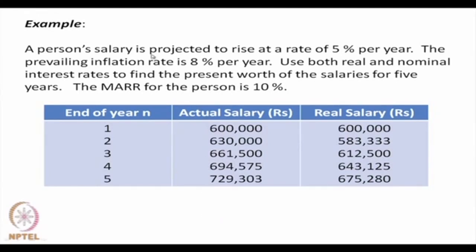Let us say that a person's salary is projected to rise at a rate of 5% per year. The prevailing inflation rate is 8% per year. Use both real and nominal interest rates to find the present worth of the salaries for 5 years. The minimum attractive rate of return for the person is 10%. The salary in the first year was 600,000 rupees. Next year is 5% more, that comes to 631,000. The third year is still 5% more, so the salary rises at 5% per year.